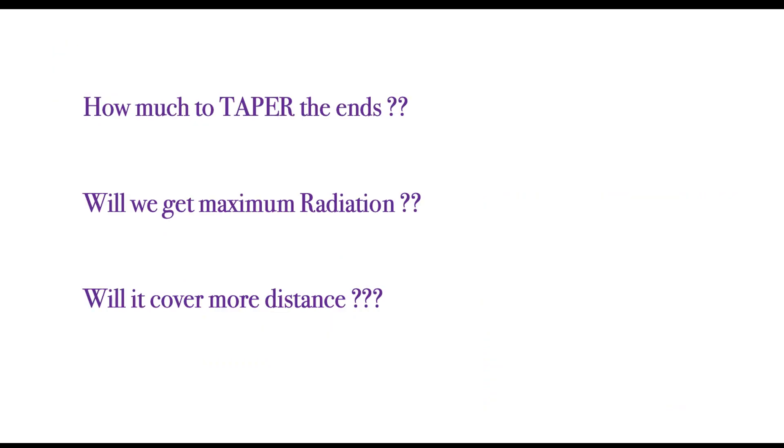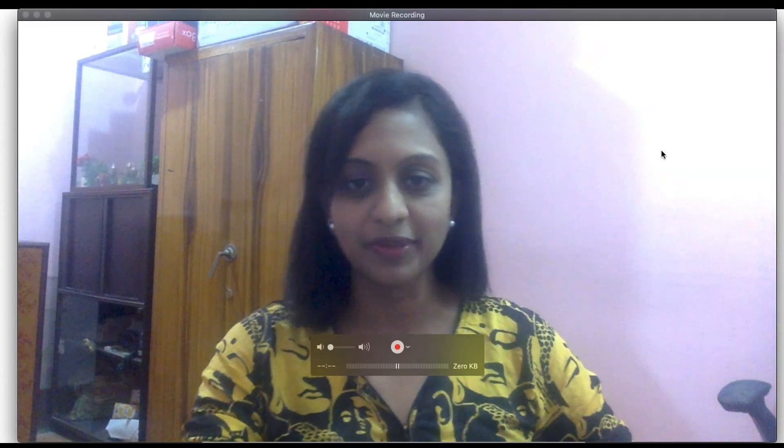That was the aim of this whole video. The next question is: okay, I will taper the ends — but how much should I taper them? Will I get maximum radiation or will it cover more distance? Many such questions will come into picture. We will discuss this in our next video. This video basically talks about increasing radiation by tapering the edges of your open circuit. How much to taper it, and do I really need an antenna there — or is just tapering and leaving it enough? All these things we will see in the next episode. Thank you so much.